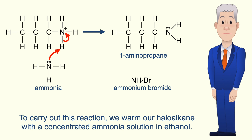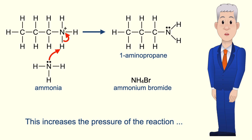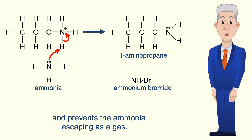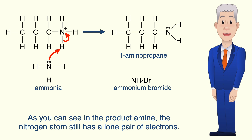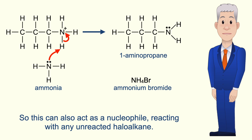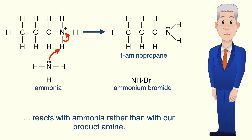To carry out this reaction we warm our haloalkane with a concentrated ammonia solution in ethanol. This reaction is carried out in a sealed tube, which increases the pressure of the reaction and prevents the ammonia escaping as a gas. It's also important that we use an excess of ammonia. As you can see in the product amine, the nitrogen atom still has a lone pair of electrons, so it can also act as a nucleophile reacting with any unreacted haloalkane. By using an excess of ammonia we make it more likely that a haloalkane reacts with ammonia rather than with our product amine.